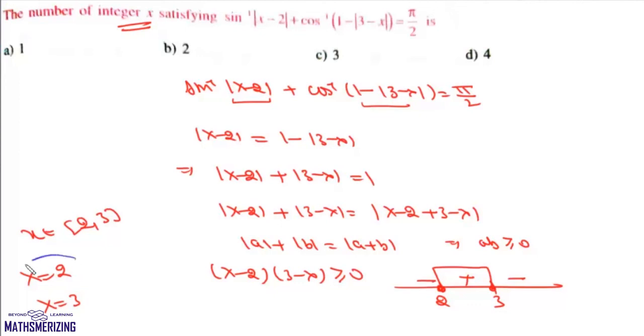There are two integral values of x: x=2 and x=3. Therefore, the number of integers is 2, which is option b.